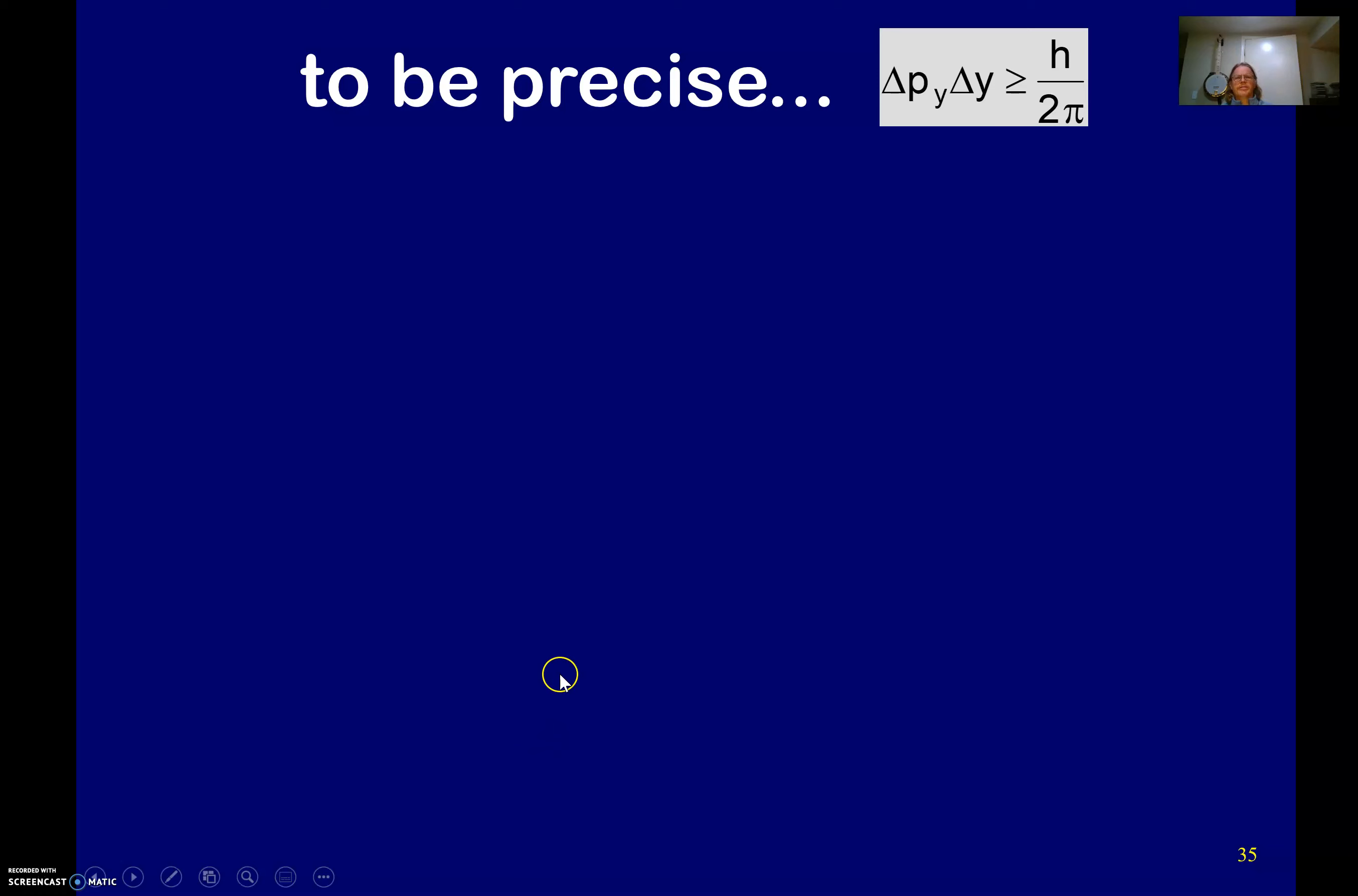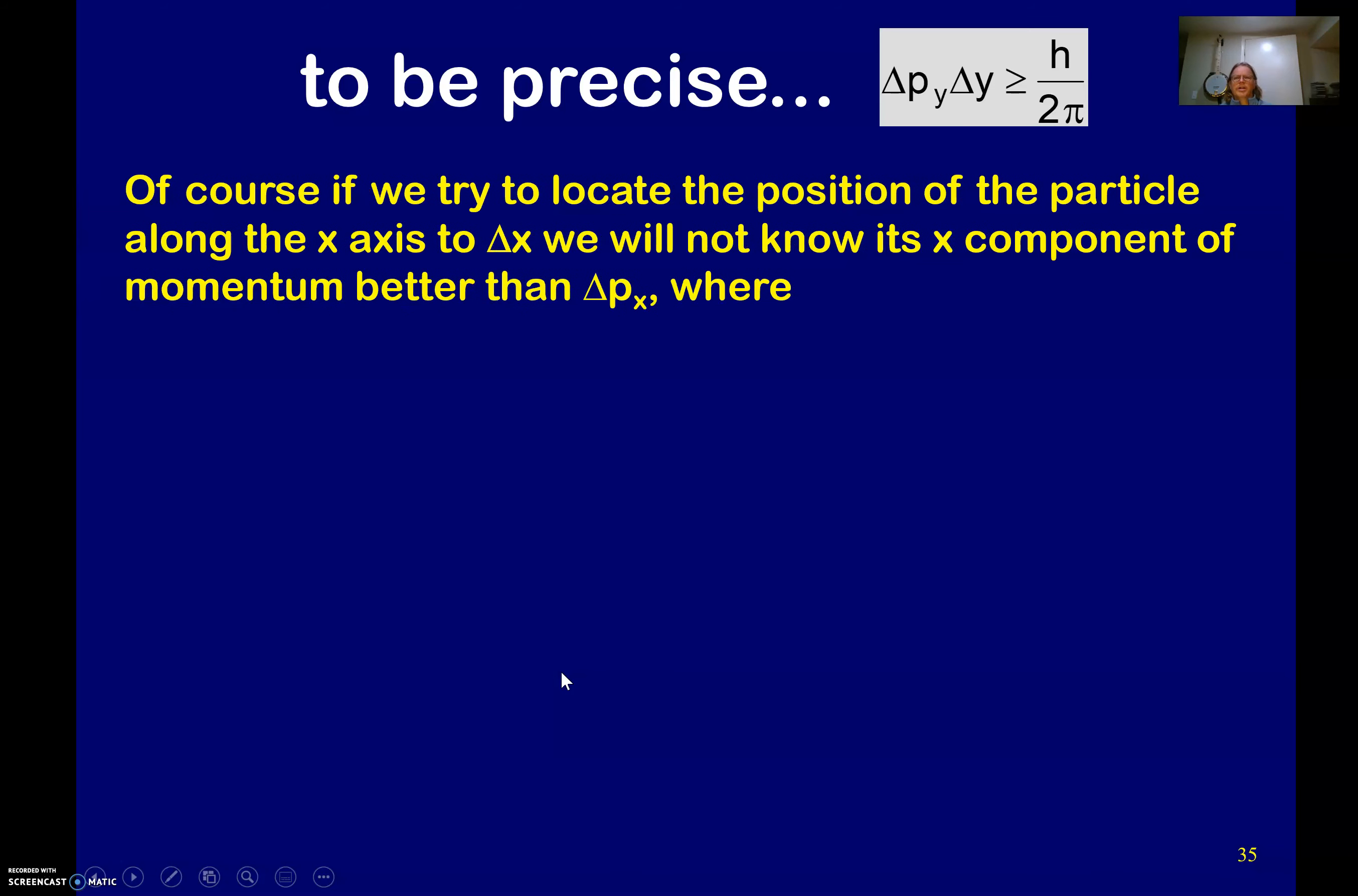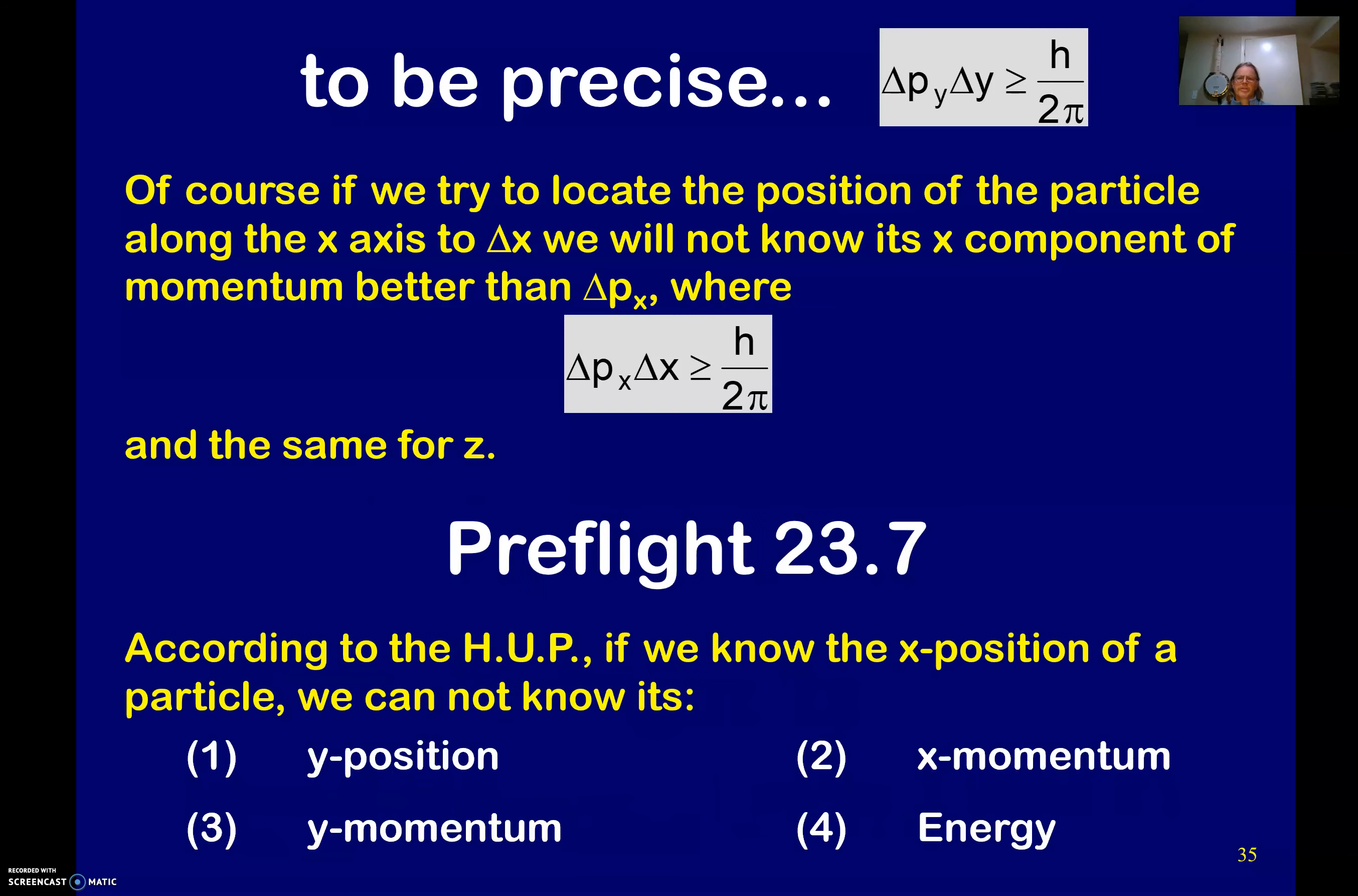So to be precise, of course, if we try to locate a position of your particle along the X axis to the change in X, we do not know its X component of the momentum better than change in P, where there you go. And the same for Z.